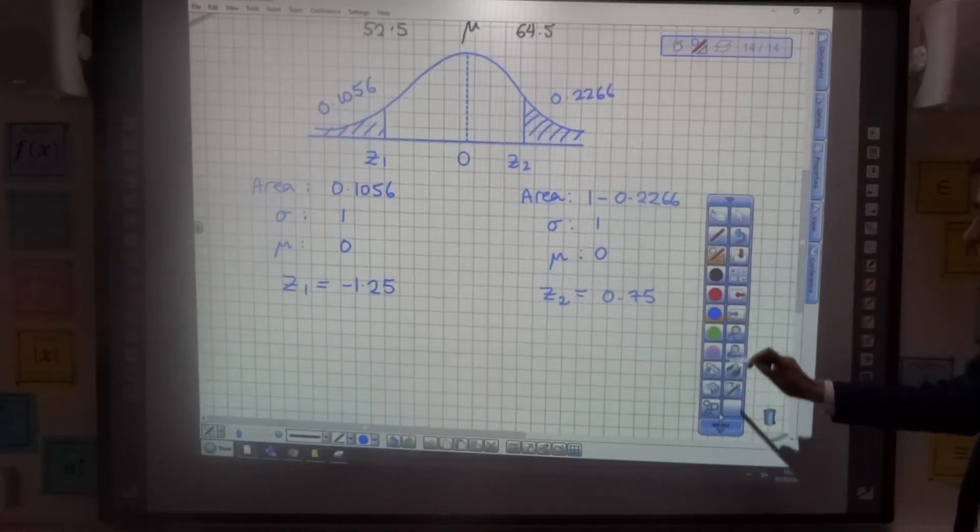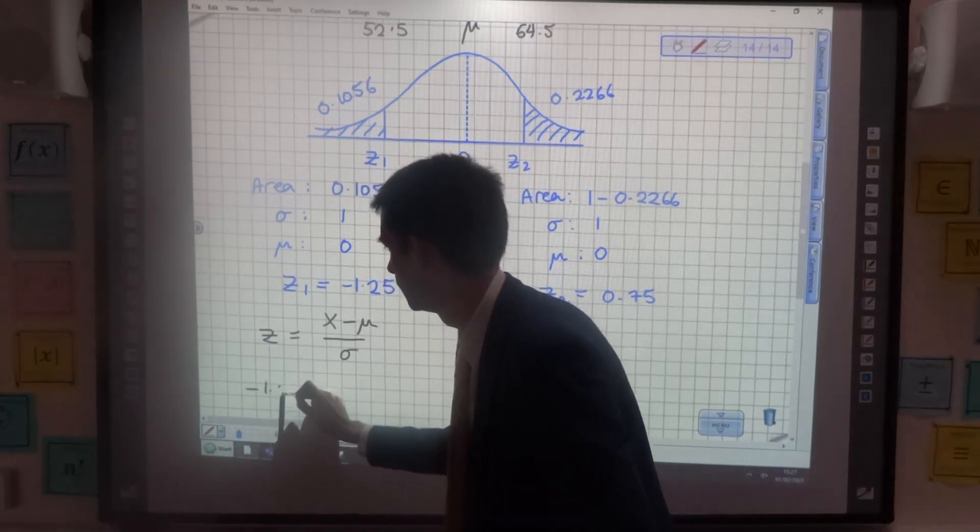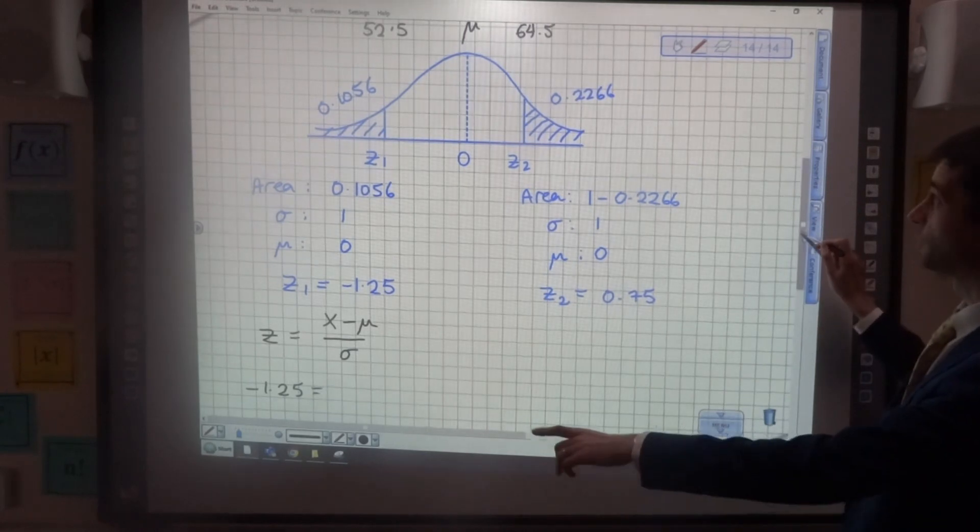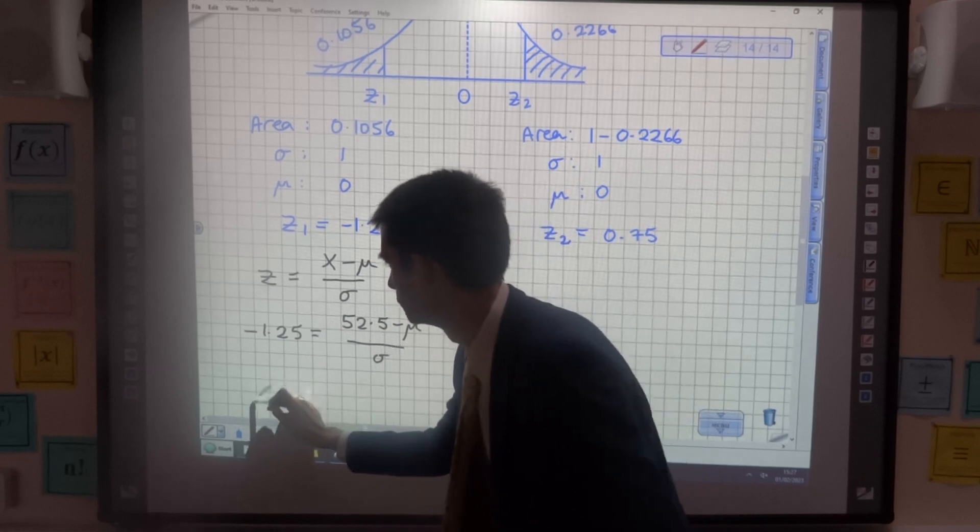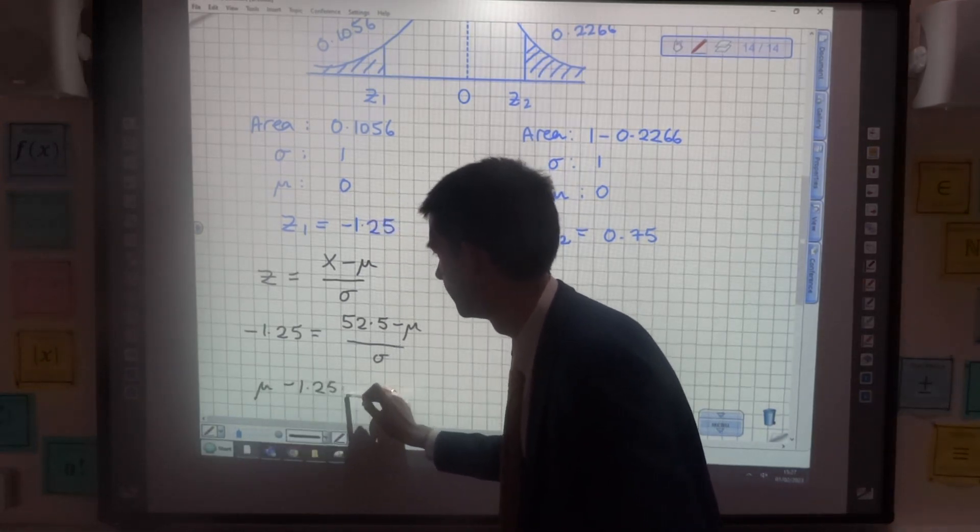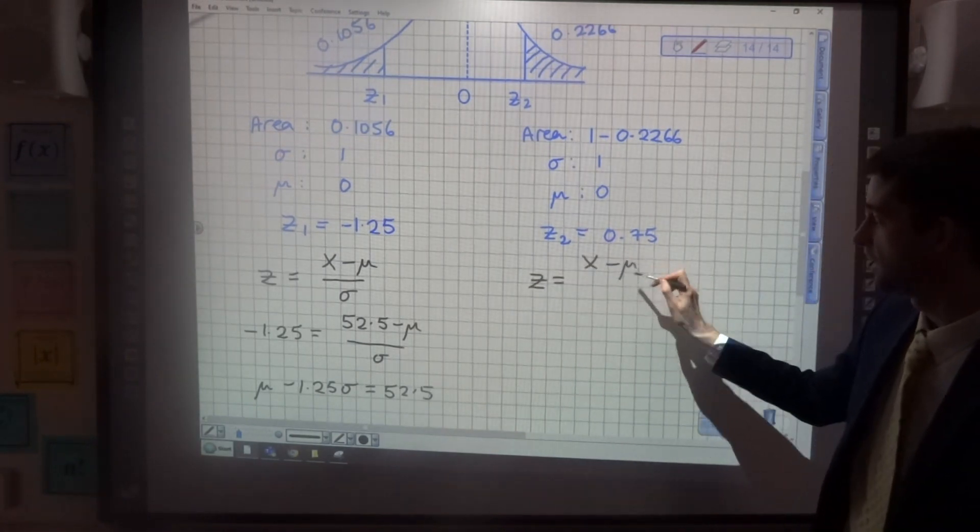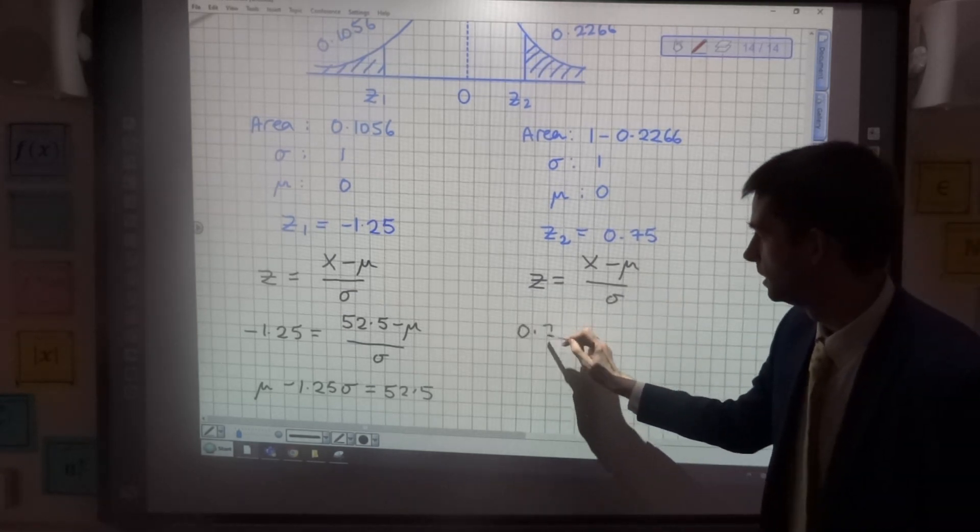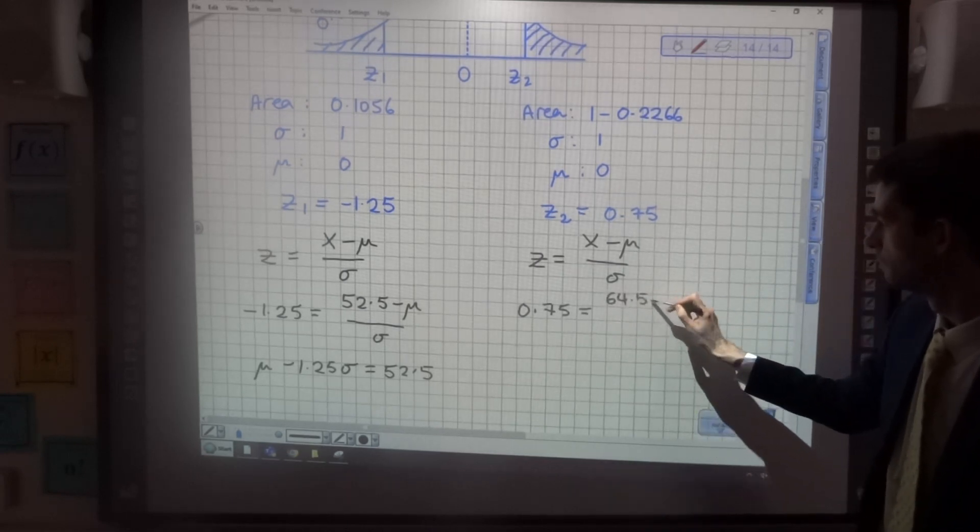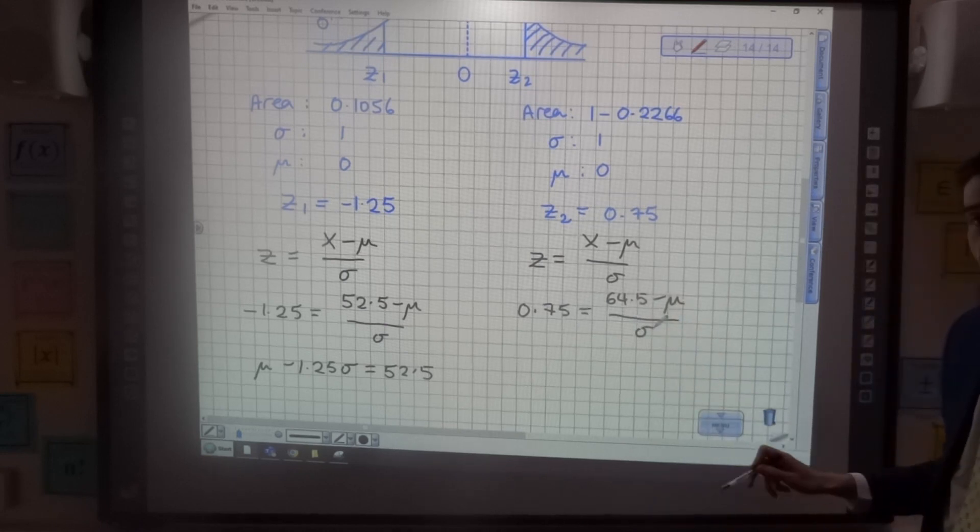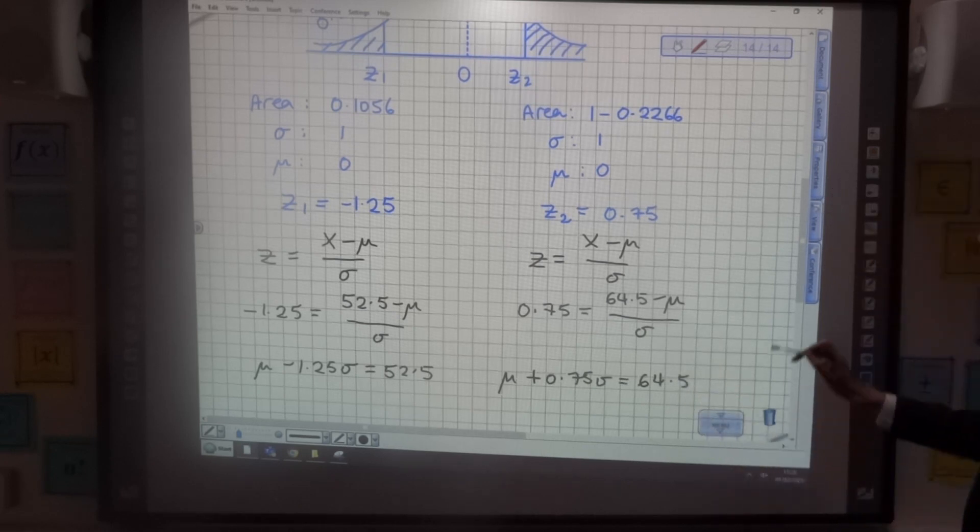So what I can now do is I can go into my standardising formula. Z equals x minus mean over standard deviation. Z here is minus 1.25. The x value that that corresponds to is 52.5. The mean we don't know and the standard deviation we don't know. And I can rearrange that to be mu minus 1.25 sigma is equal to 52.5. Same logic over here. The z value is 0.75. The x value that that corresponds to is 64.5, minus the mean we don't know over the standard deviation we don't know. But I can rearrange that equation to be mu plus 0.75 sigma is equal to 64.5.